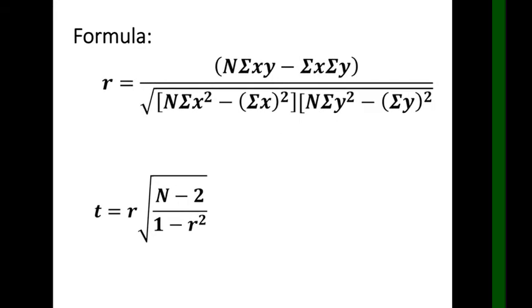For the formula, Pearson r equals: n times summation of xy minus summation of x times summation of y, divided by the square root of the quantity n times summation of x squared minus the quantity summation of x squared, multiplied by n times summation of y squared minus the quantity summation of y squared. This was already discussed in the previous video about Pearson r, so no need to discuss it further.